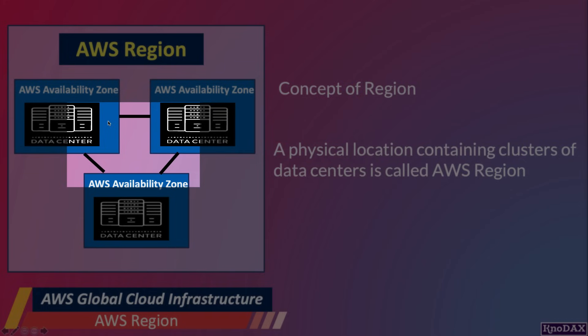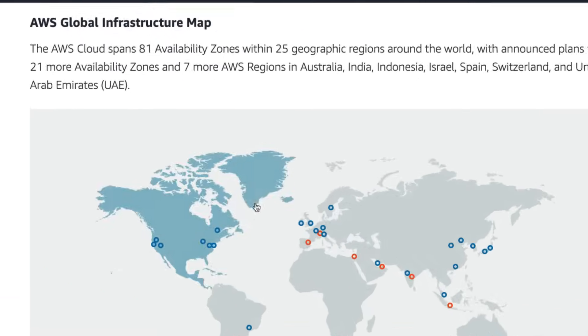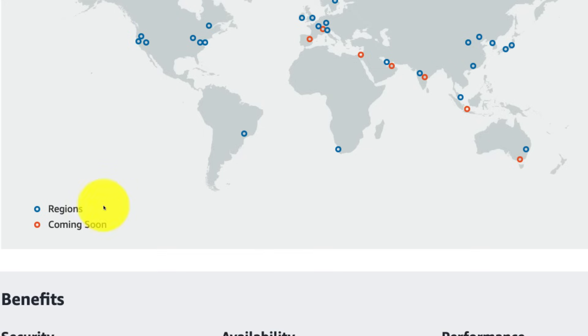Let's go to the AWS Global Cloud Infrastructure webpage to see some examples. As you can see on this map, blue circles are the AWS regions, and red circles are coming soon.